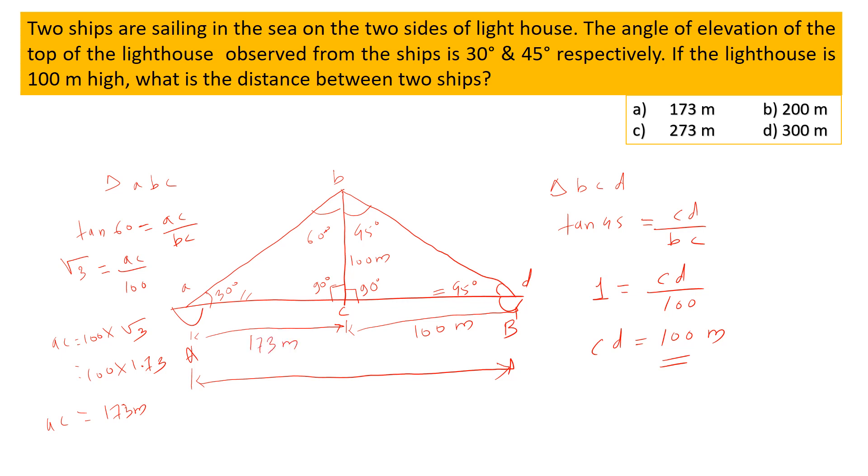So the distance between two ships is 173 meters. This one is the answer. Thank you.